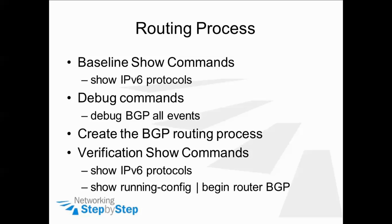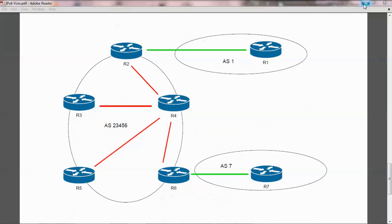Let's look at the network topology. I will be configuring the IPv6 router process for BGP on router 1. Previously, I have enabled IPv6 unicast routing and enabled IPv6 on interface FastEthernet 0/0. Also, I have configured a loopback interface and assigned it with an IPv4 address.